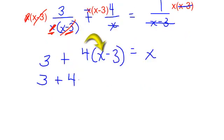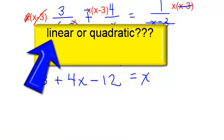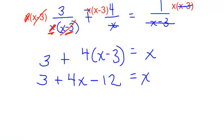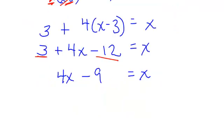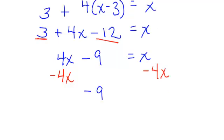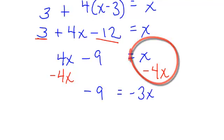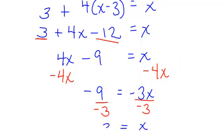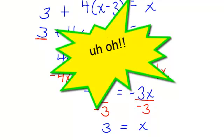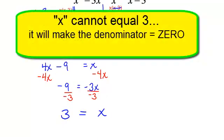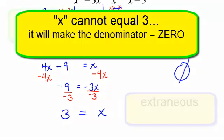So I have 3 plus 4 times x is 4x, and 4 times negative 3 is negative 12. Is this linear or quadratic? This is a linear equation — I don't have any x-squared. So I'm going to combine my like terms: 3 and negative 12 gives negative 9. On the left side, 4x minus 9 equals x. I'm going to subtract 4x from both sides to get the x terms together. So I will have negative 9 equals x minus 4x, which is negative 3x. Divide both sides by negative 3 and x will equal 3. But remember, we said x in our original problem could not equal 0 or 3. Therefore, this answer actually has no solution — it is extraneous.